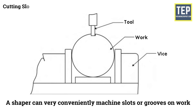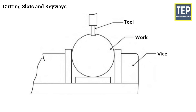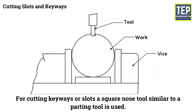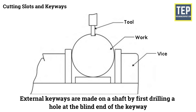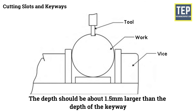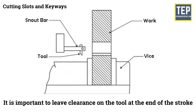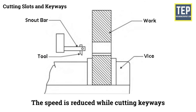Cutting slots and keyways: with suitable tools a shaper can conveniently machine slots or grooves, including keyways on shafts and internal keyways on pulleys or gears. A square nose tool similar to a parting tool is used. External keyways are made on a shaft by first drilling a hole at the blind end of the keyway; the hole diameter should be 0.5 to 0.8 millimeters oversize compared to the keyway width, and the depth about 1.5 millimeters larger than the keyway depth. The stroke is carefully adjusted to terminate exactly at the clearance hole, and the speed is reduced while cutting keyways.